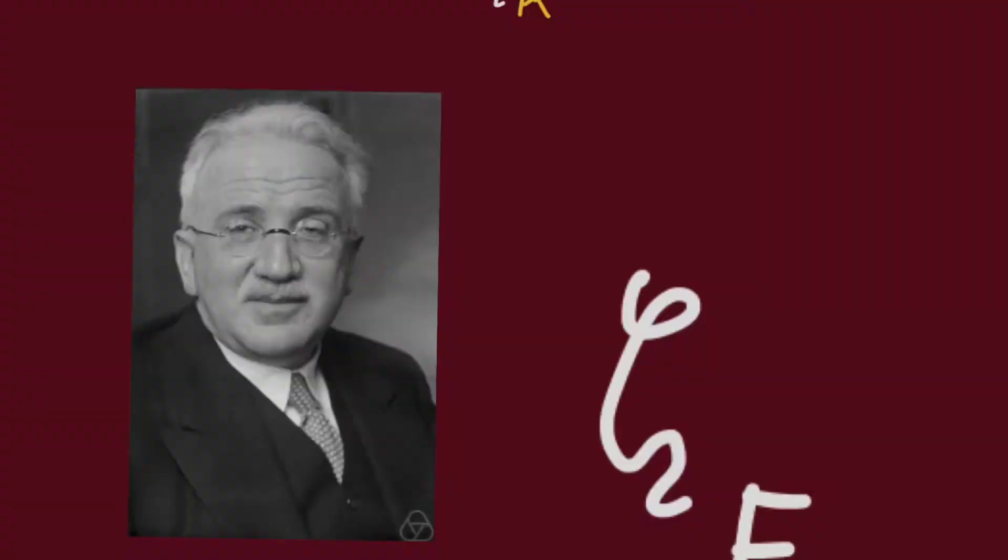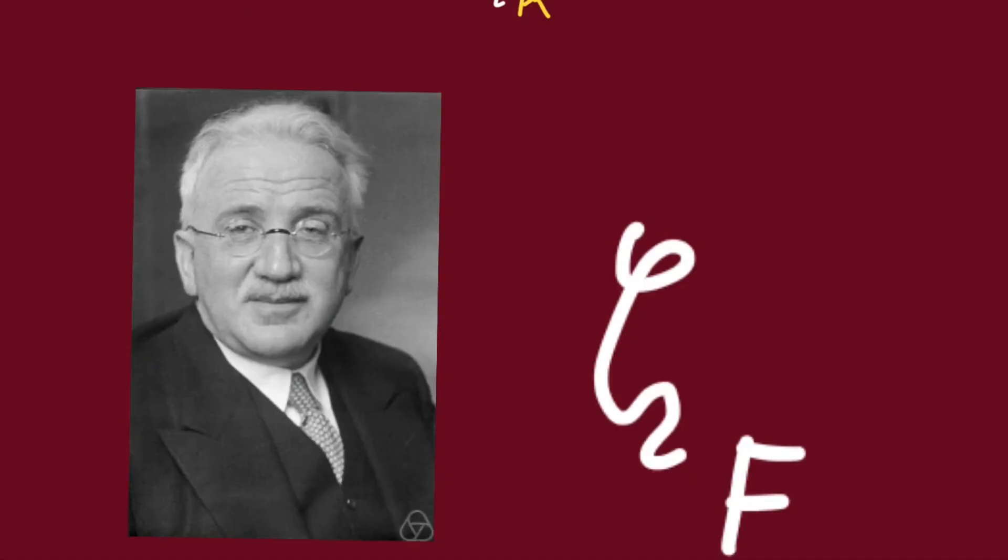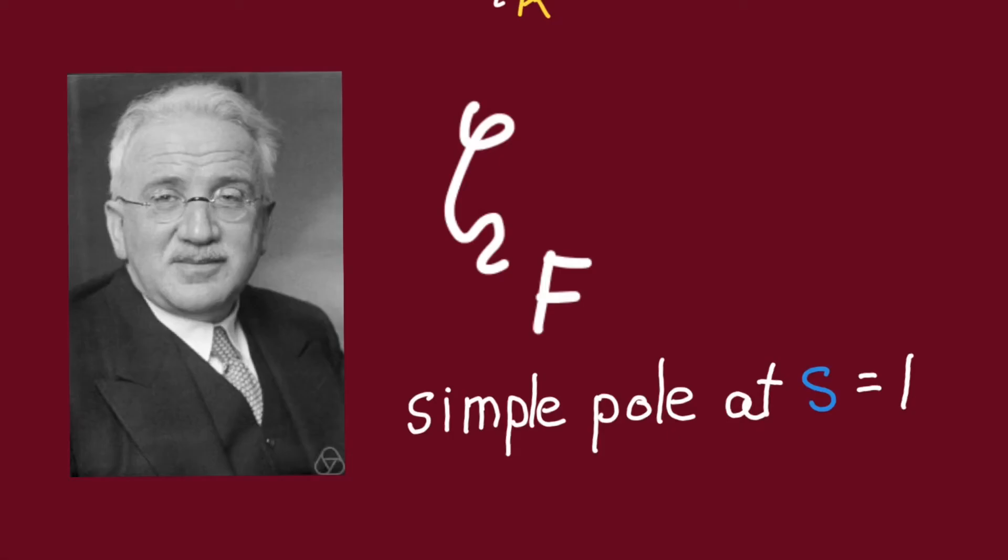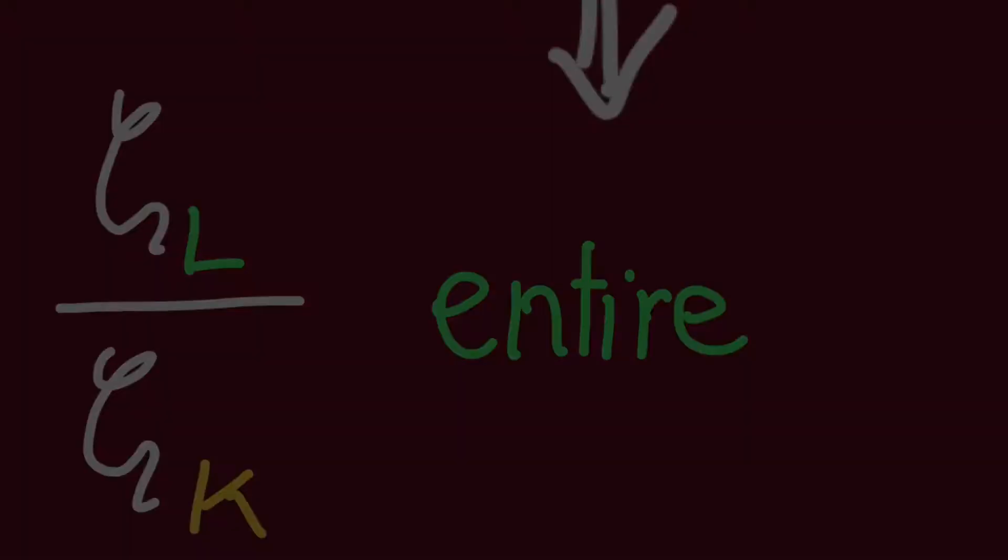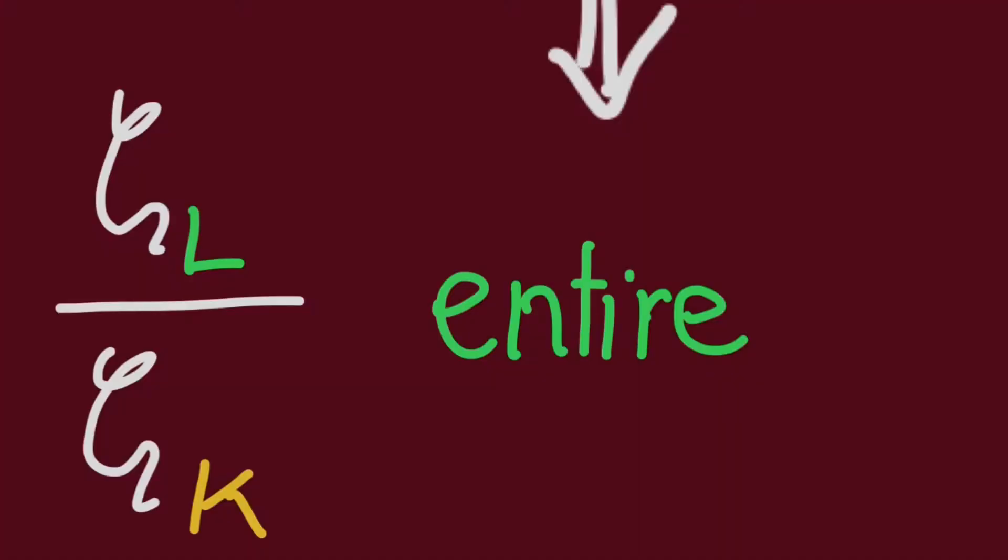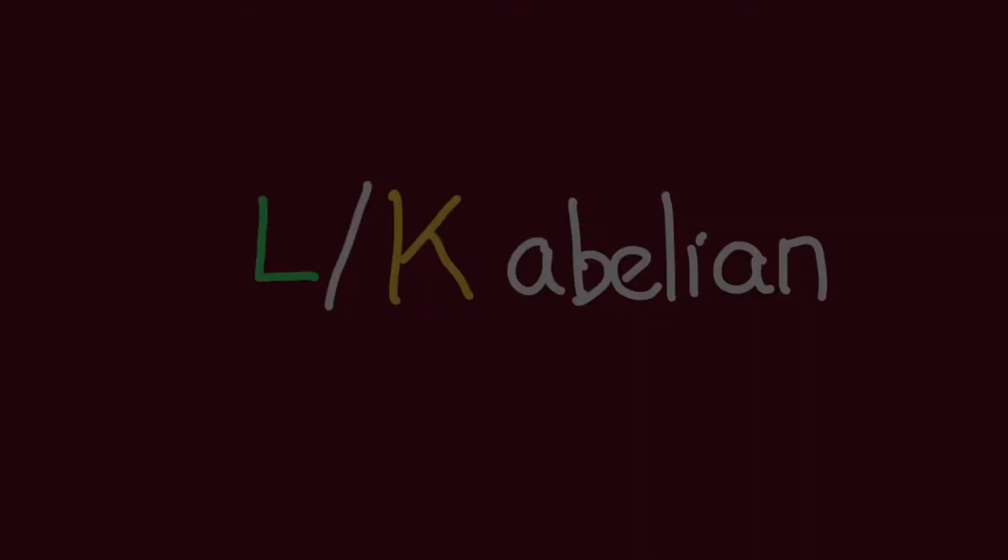Now, in 1915, Hecke already showed the zeta function of every number field is analytic on the complex plane except for a simple pole at s equal to 1. Therefore, we know at least that this quotient is going to be meromorphic. Thus, the obstruction to this quotient being entire are the zeros of zeta K that are not cancelled out by the zeros of zeta L.